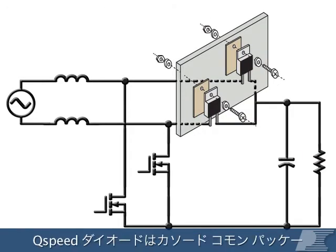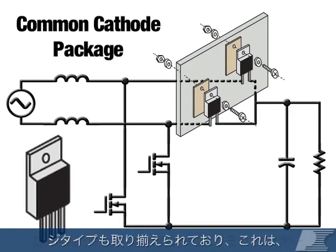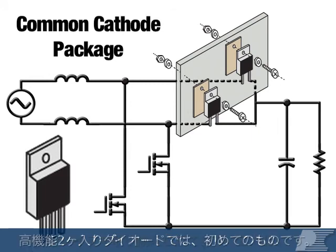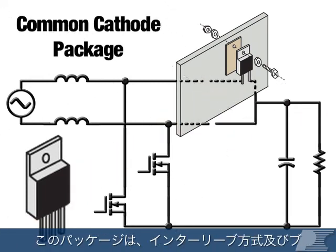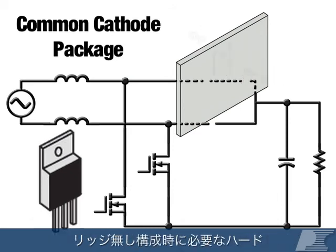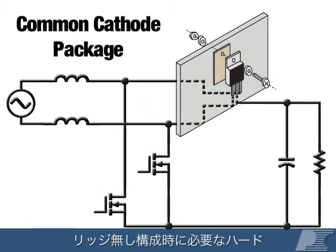Q-Speed diodes are also available in a common cathode package, a first for high-performance tandem diodes. This package reduces the amount of mounting hardware required in interleaved and bridgeless topologies.